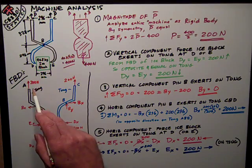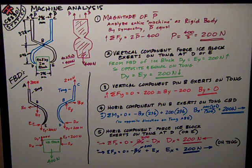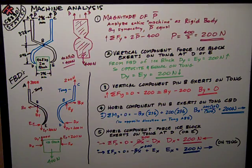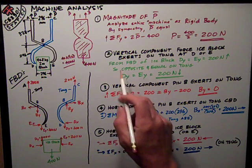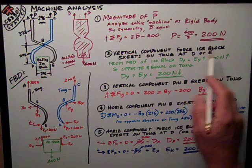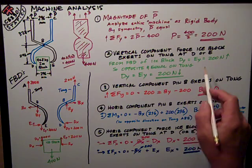And then I have my known force P up here, 200 newtons. So once I've gotten a good free body diagram, I'm really on the way to a good solution. This is the key to the highway. The second number I want was asked for is the vertical component, the force of the force that the ice block exerts on the tong at either D or E, depending on which version of the test you had.